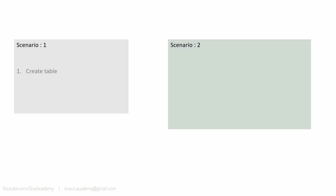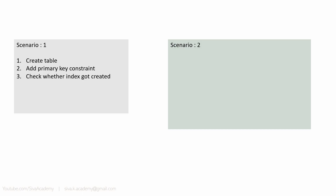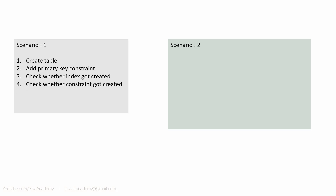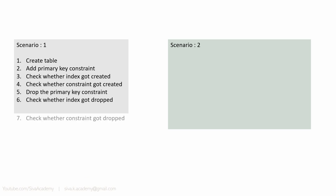The first scenario is we are going to create a table and add a primary key constraint for that table. Once a constraint is added, it will create an underlying index. We are going to check whether an index is created, whether a constraint is created, then drop the primary key constraint and check whether the index and constraint got dropped.